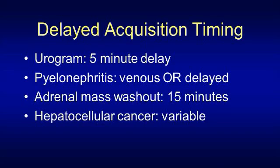When do we perform them? The delayed acquisition is part of the CT urogram. Here at Hopkins we use a five-minute delay as the final acquisition in patients with hematuria or renal collecting system pathology. A delayed acquisition is excellent for pyelonephritis, but you do not need it in addition to a venous acquisition — it should be either venous or delayed phase.